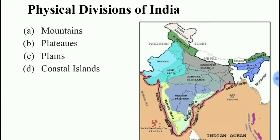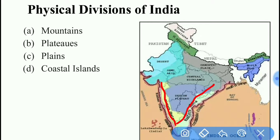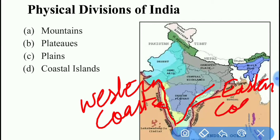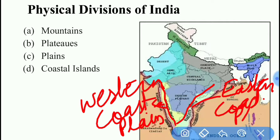To the west of the Western Ghats lies the western coastal plain of India, while to the east of the Eastern Ghats lies the eastern coastal plains. These are basically called the western coastal plains and the eastern coastal plains.